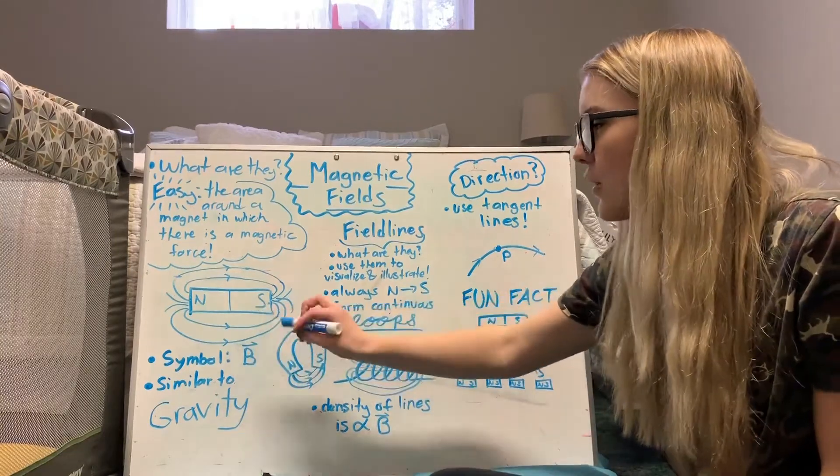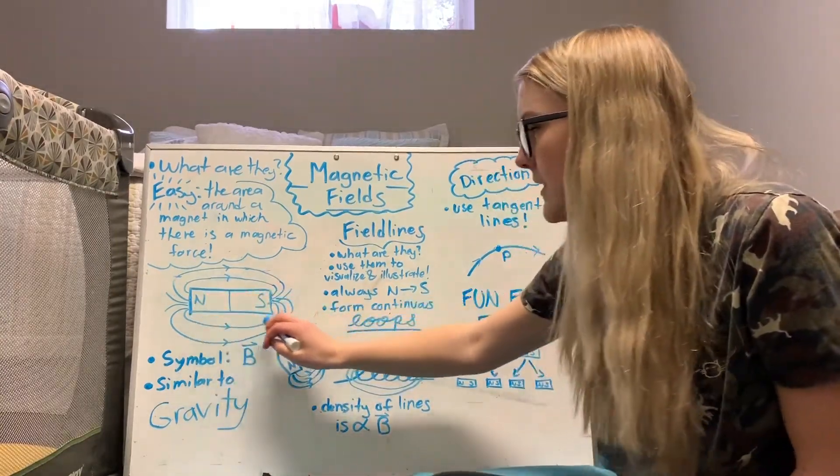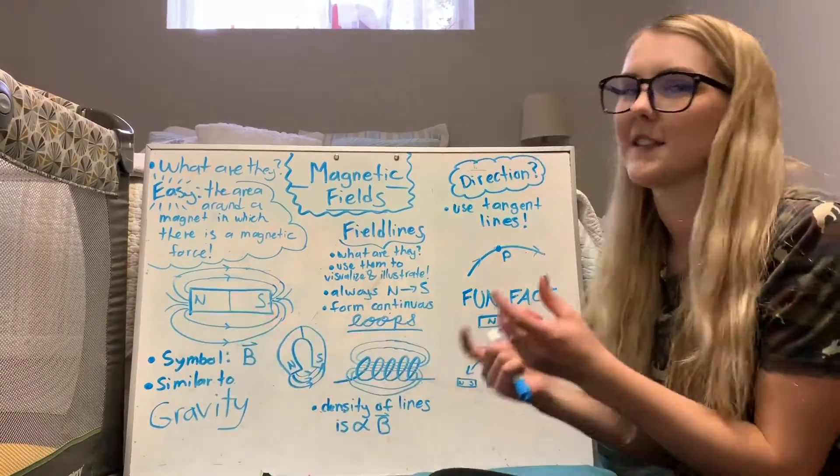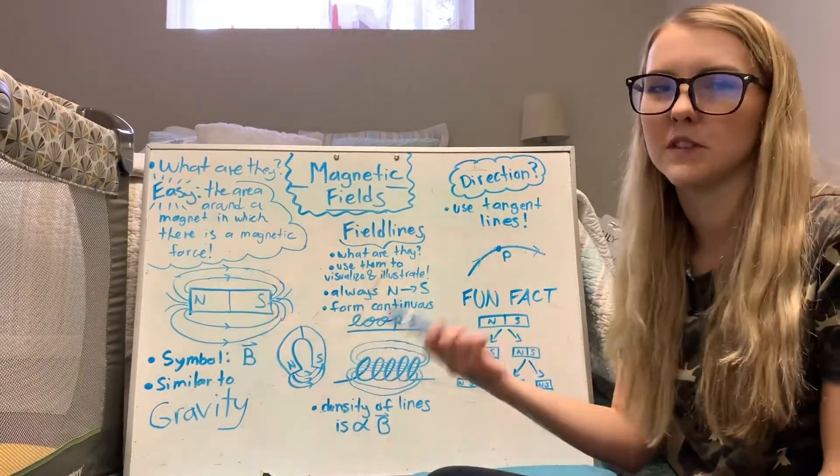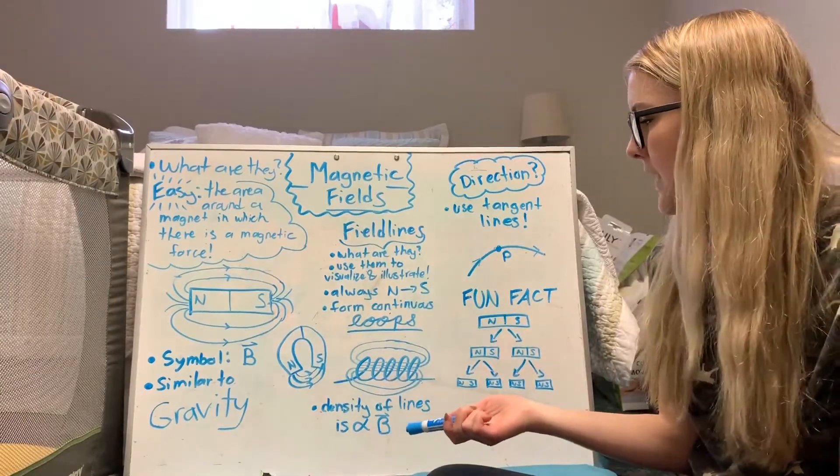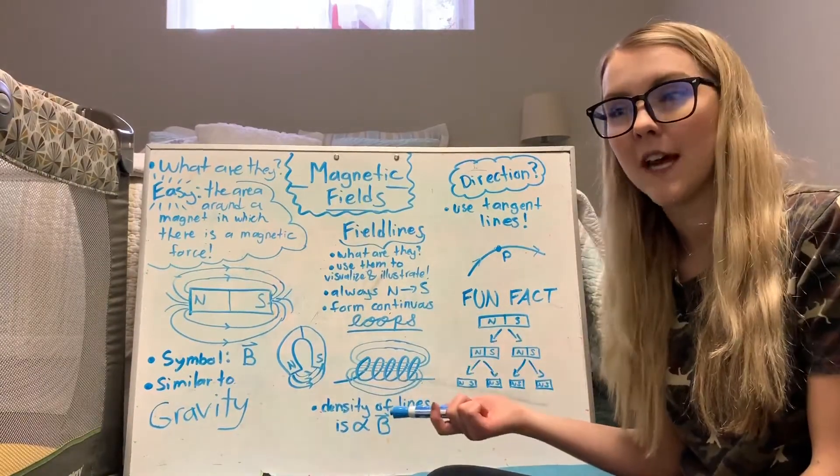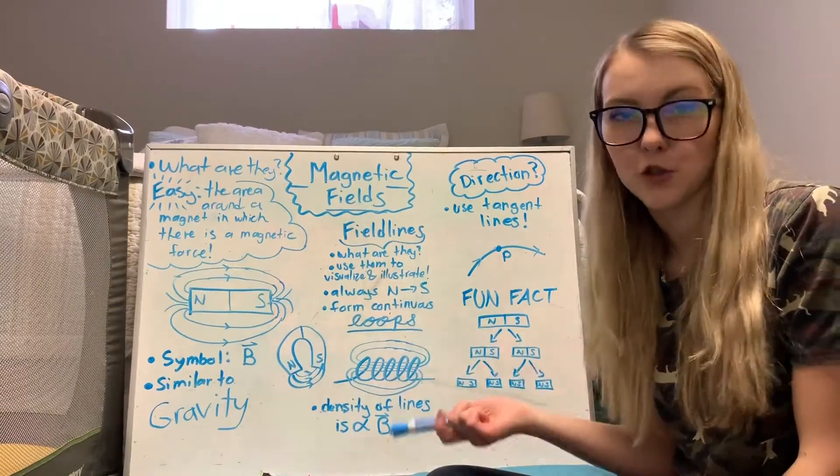So with the bar magnet I could have drawn the lines continuing to make closed loops, but because it's like a solid bar it's common to draw them this way, but they are continuous loops without a beginning or an end. So that's another unique thing about magnetic field lines which differs from electric field lines.